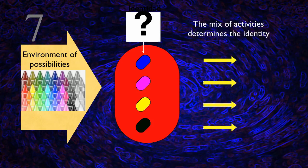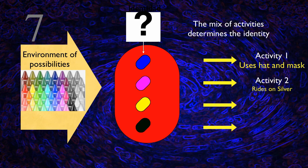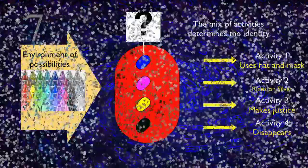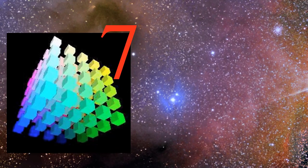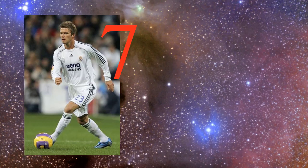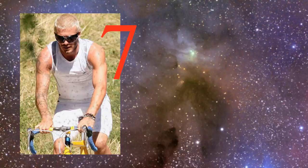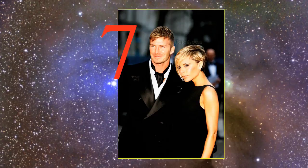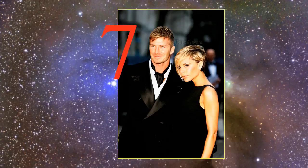Let's consider an example. Who are we talking about if we describe him by saying: he wears a hat and a mask, he rides on a horse named Silver, he works for justice, he rides away. Every human being has many dimensions of order according to his multiple activities or desires: player, athlete, model, businessman, husband, father. For each dimension, an attractor traps the relevant flow — each one as a small hurricane stacked one on top of the other, one for each activity or desire.